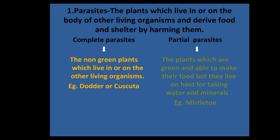Parasites are of two types: complete parasites and partial parasites. Complete parasites are entirely dependent on the host organism — they are non-green plants which live in or on the body of another organism and derive both food and shelter from it, while harming it. An example of a complete parasite is dodder, also called Cuscuta.